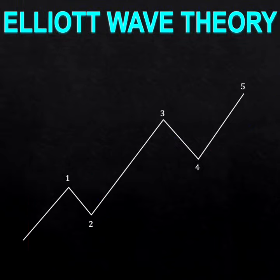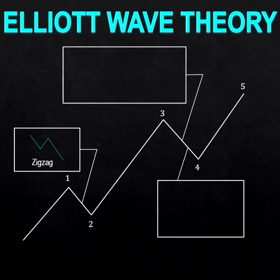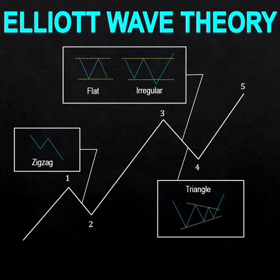Rule 1. In the same level of waves, if wave 2 is a simple correction such as a zigzag, wave 4 will be complex. In the contrarian case, if wave 2 is complex, wave 4 will be simple.